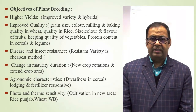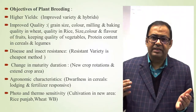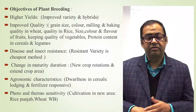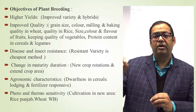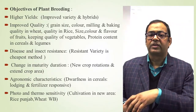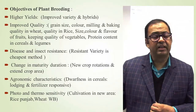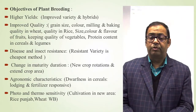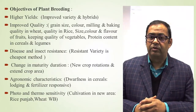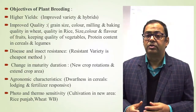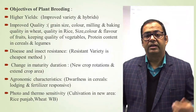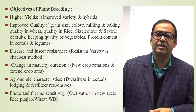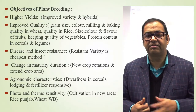Our next objective is to develop thermo- and photo-insensitive varieties. This helps us grow varieties around the year — we can grow them any time. Earlier, photo-sensitive varieties would only flower and fruit at a certain temperature and photoperiod. By developing photo-insensitive and temperature-insensitive varieties, we can now take crops round the year. For example, in Punjab we now grow rice also, and in West Bengal we now grow wheat also.